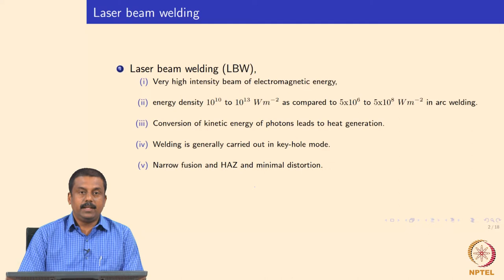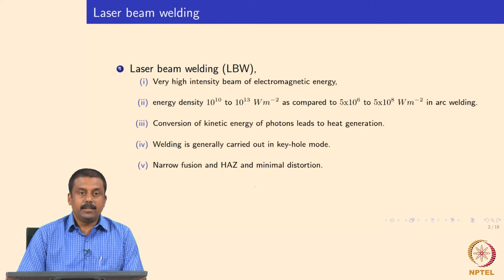The energy density of the laser beam is extremely high compared to conventional arc welding processes. For example, in a typical Nd:YAG laser source, the current density can vary from 10^10 to 10^13 watts per square meter, compared to 10^6 to 10^8 in arc welding processes. Because of this extremely intensive heat source, most of the laser welding is carried out in keyhole mode.